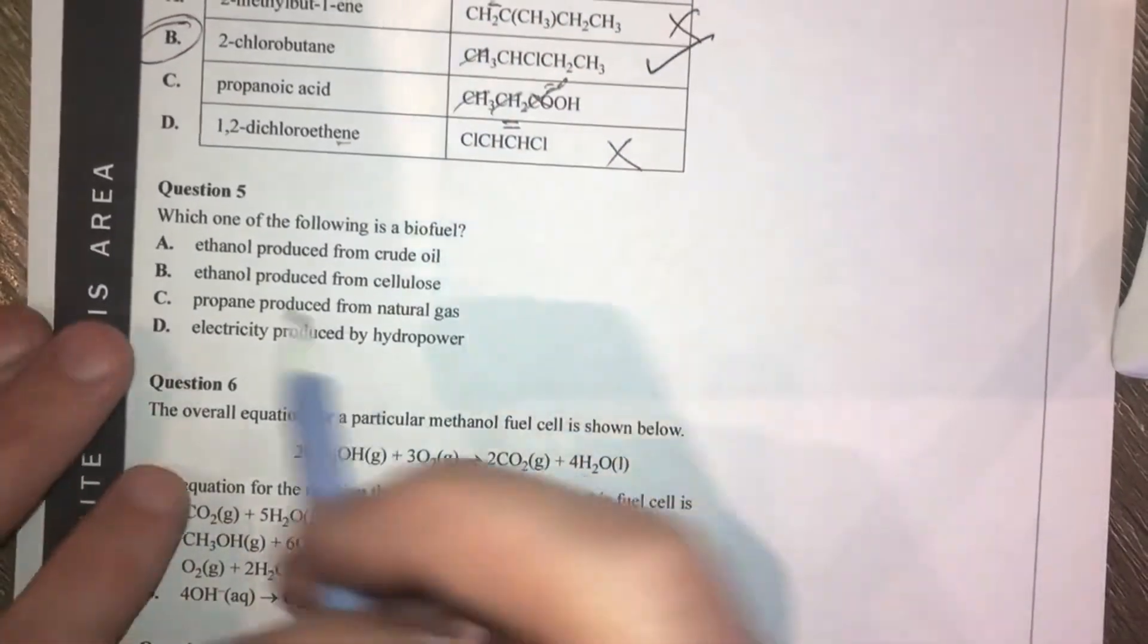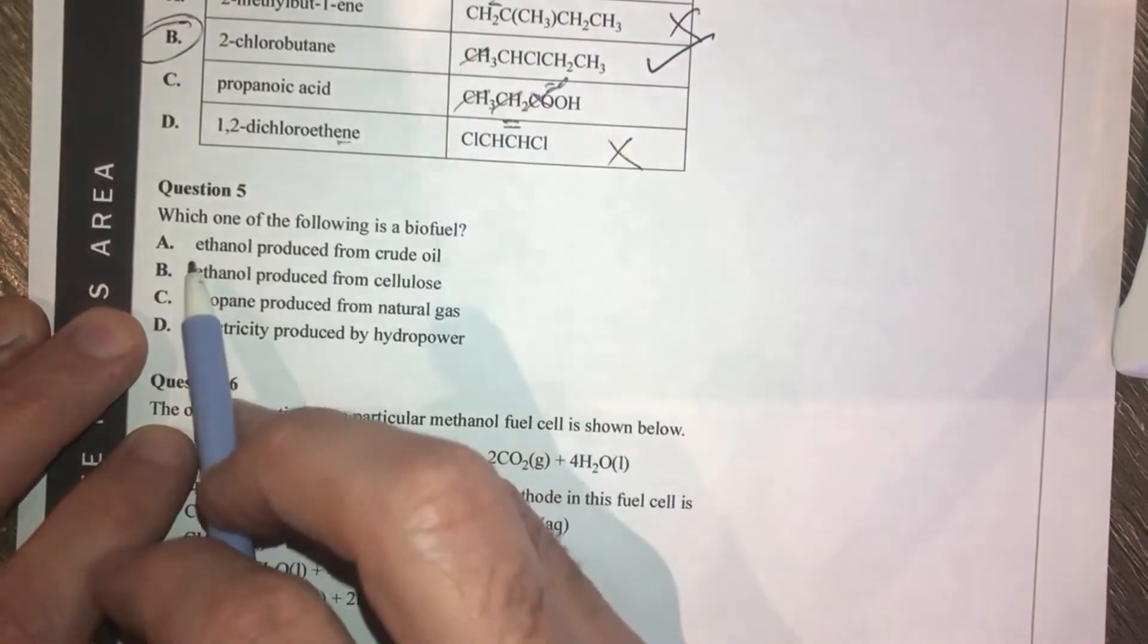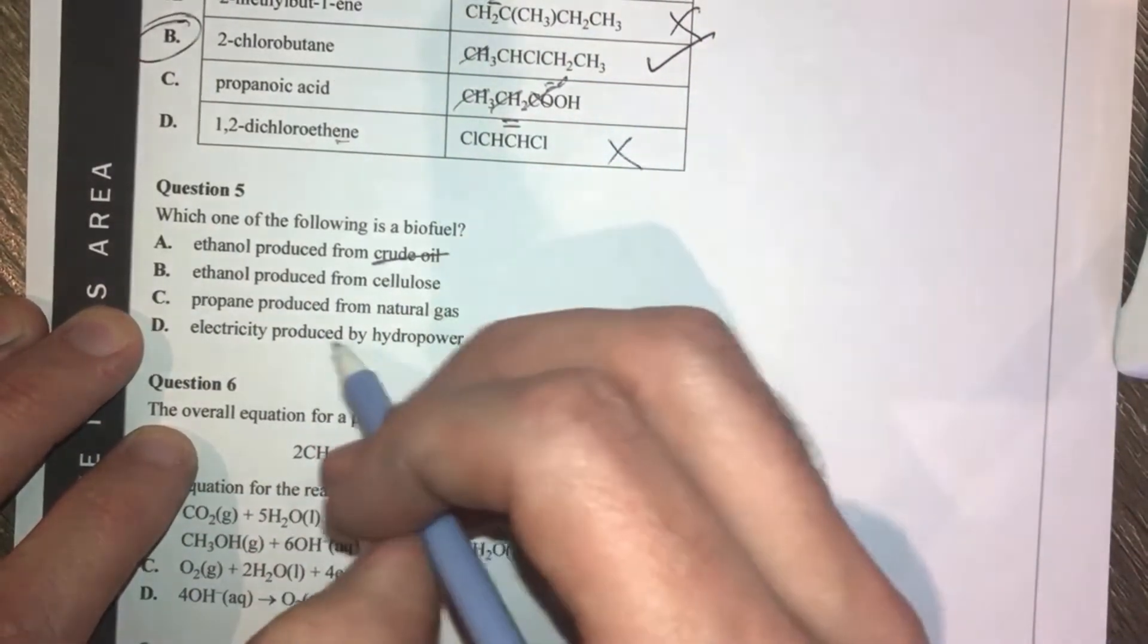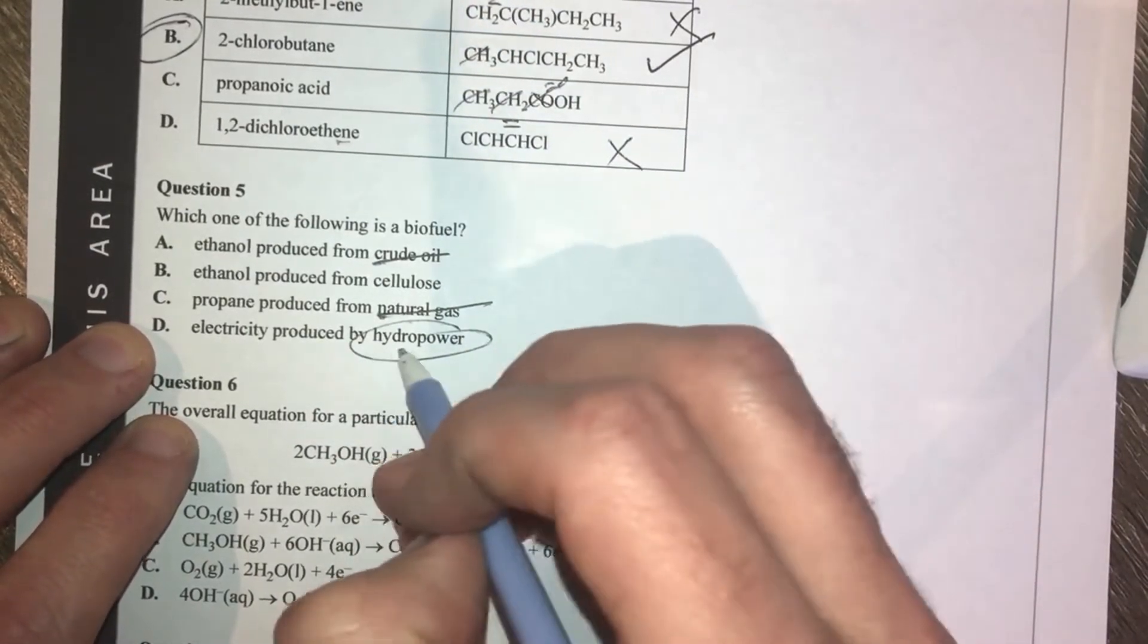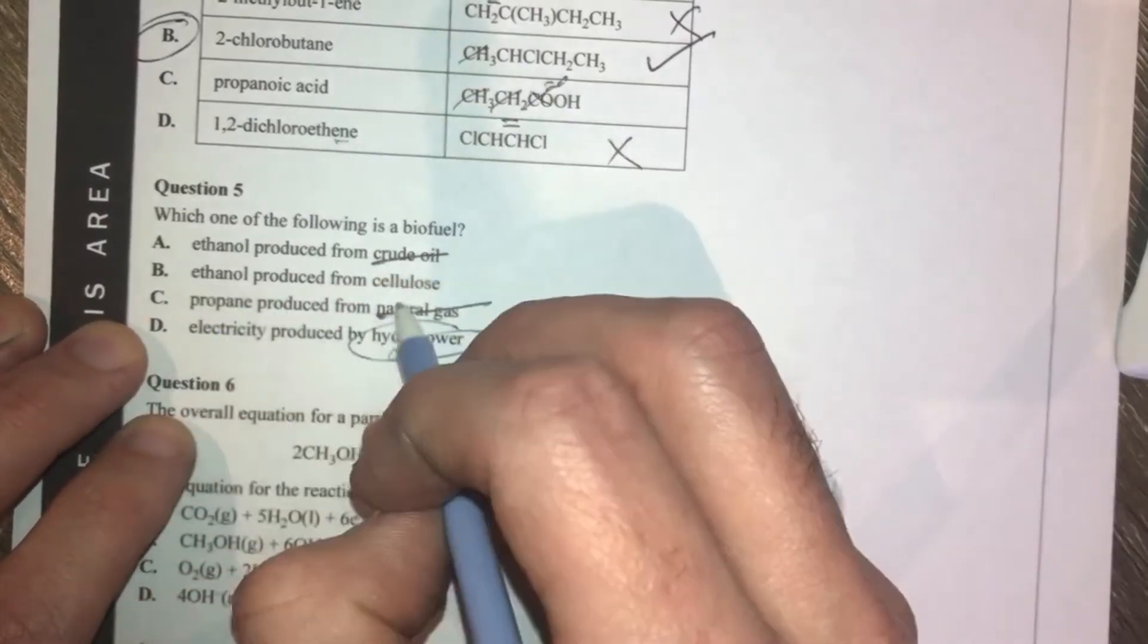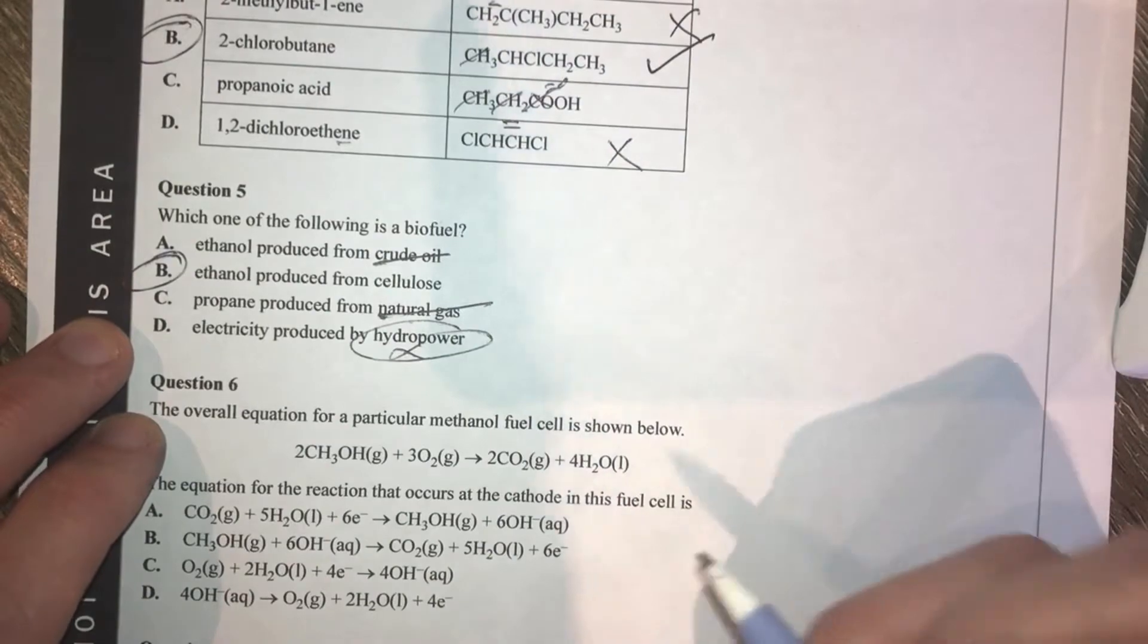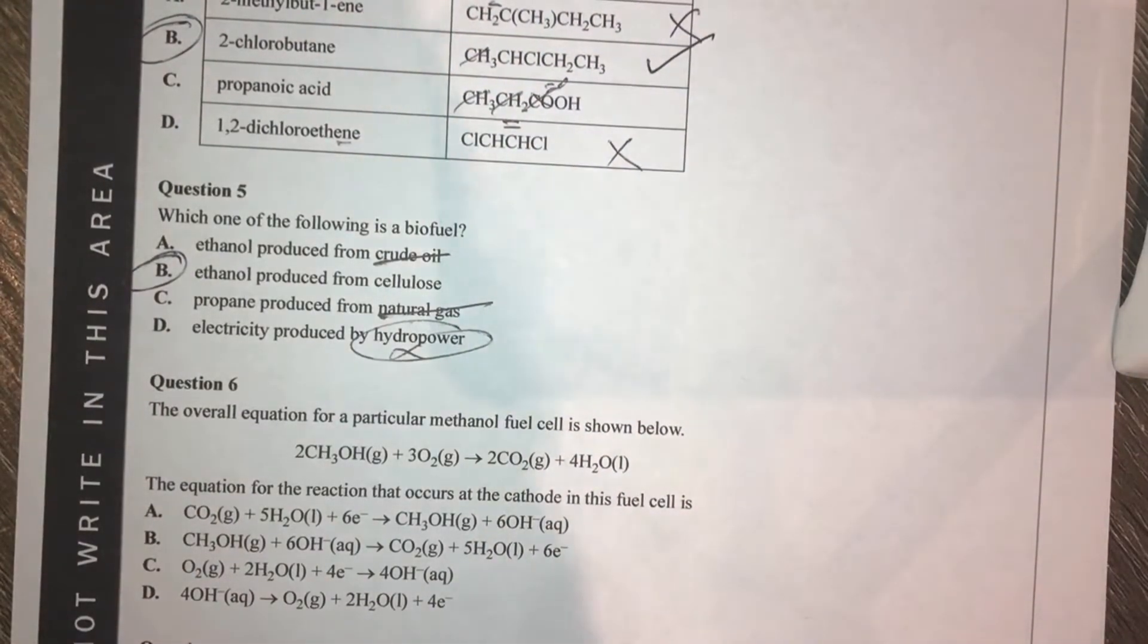Lastly, in this video, we've got our question 5. Which of the following is a biofuel? Ethanol produced from crude oil? Crude oil is not a biofuel. Natural gas is not a biofuel. Hydropower is renewable, but it's not a fuel. So therefore, ethanol produced from cellulose, that seems to be the trick there for question 5. I'm going to have a quick glance through the examiner's report on these, and then we'll finish this video.